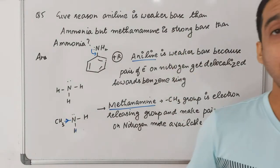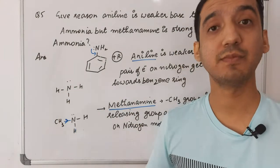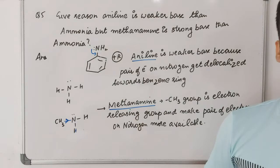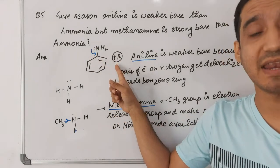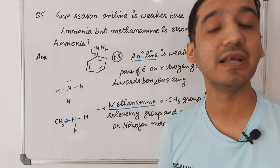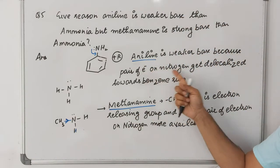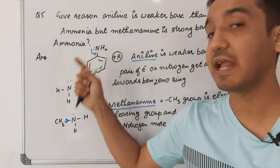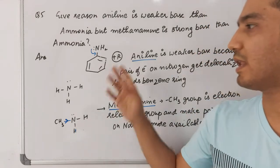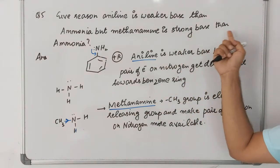Question five: give reasons why aniline is a weaker base than ammonia, but methylamine is a stronger base. Ammonia has a lone pair of electrons and can donate them, acting as a base. In aniline, the nitrogen electrons show a +R (resonance) effect — electrons move into the benzene ring, making them less available. So aniline is a weaker base because the lone pair on nitrogen gets delocalized toward the benzene ring, making electron donation difficult.